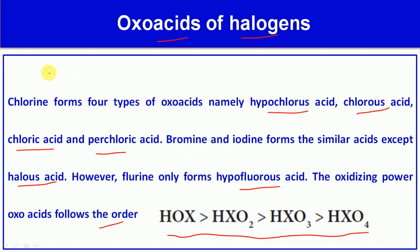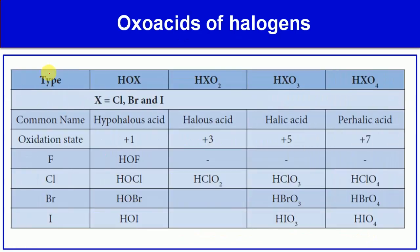We are going to discuss these points in table form. The types are HOX, HXO2, HXO3, and HXO4, where X represents the halogens — fluorine, chlorine, bromine, and iodine — noting that fluorine is missing from some types.